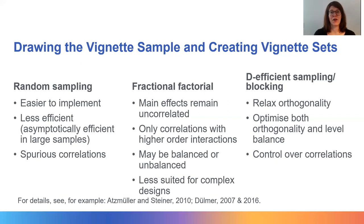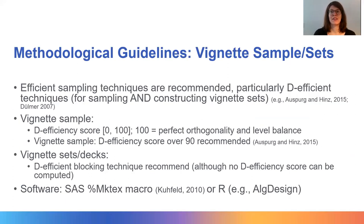D-efficient sampling relaxes the requirement of orthogonality and optimizes both orthogonality and level balance in the vignette sample and the vignette sets. In contrast to fractional factorial designs, it is therefore better suited for more complex designs. D-efficient sampling allows full control over which vignette dimensions and interactions of dimensions are correlated in the vignette sample. D-efficient blocking techniques can also be used to allocate vignettes to different vignette sets while optimizing orthogonality and level balance. A D-efficiency score of 100 signifies perfect orthogonality and level balance, which can only be achieved in the vignette universe.